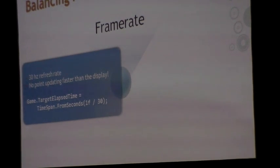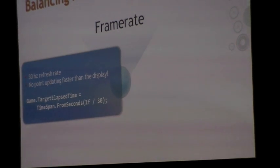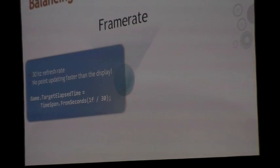In the XNA framework game loop, you set the frame rate using game.target elapsed time. You can set it higher — it will call update faster — but you'll only actually draw graphics to the screen at 30Hz. You can also set it lower. There are some games where 10 frames a second is good enough for your game design.